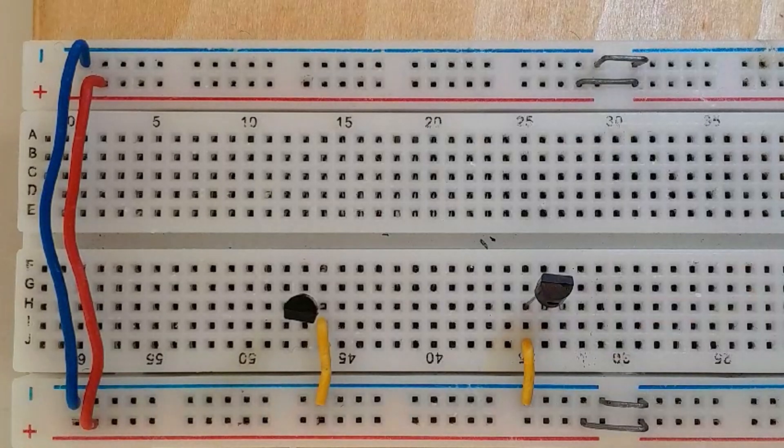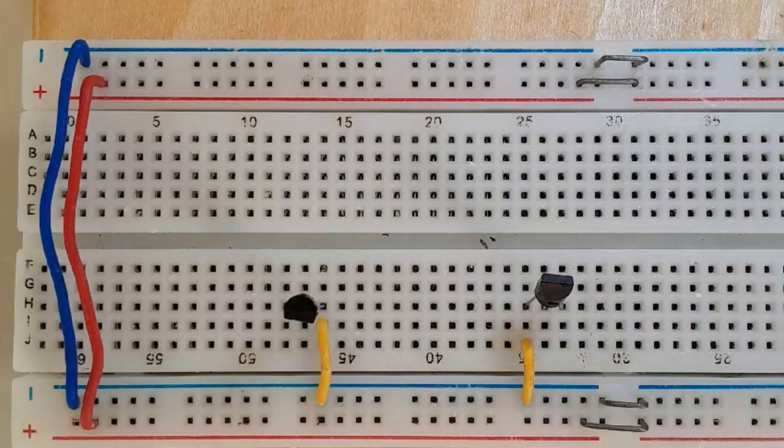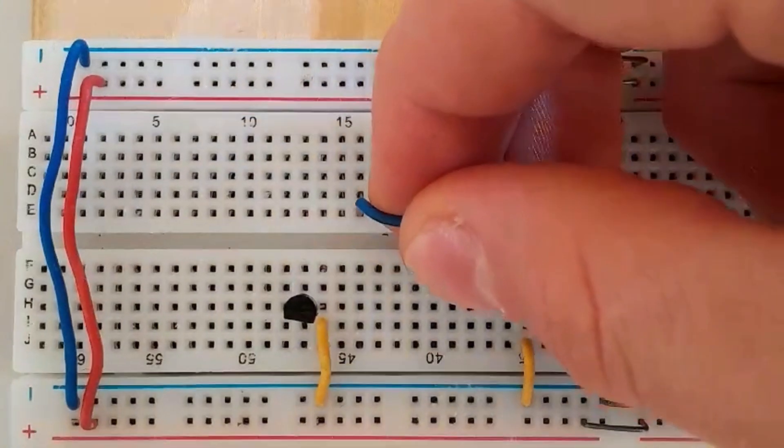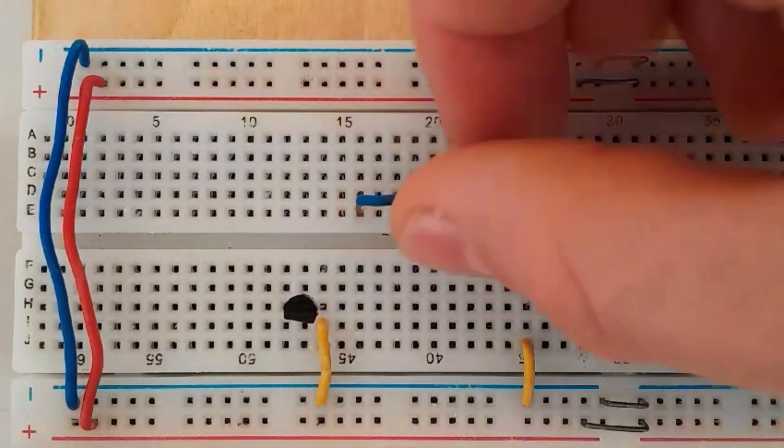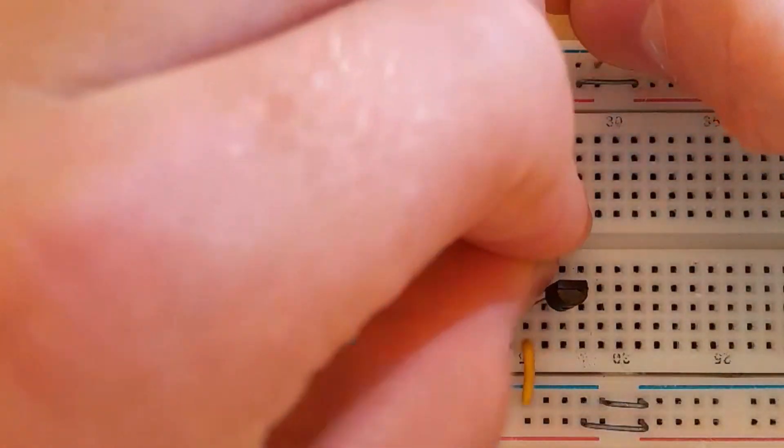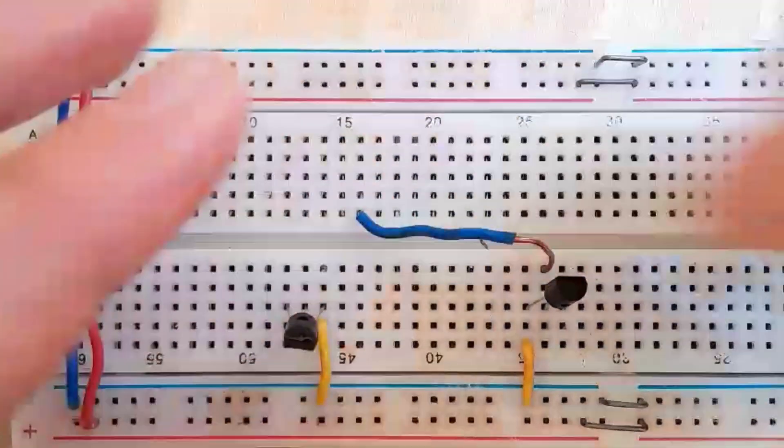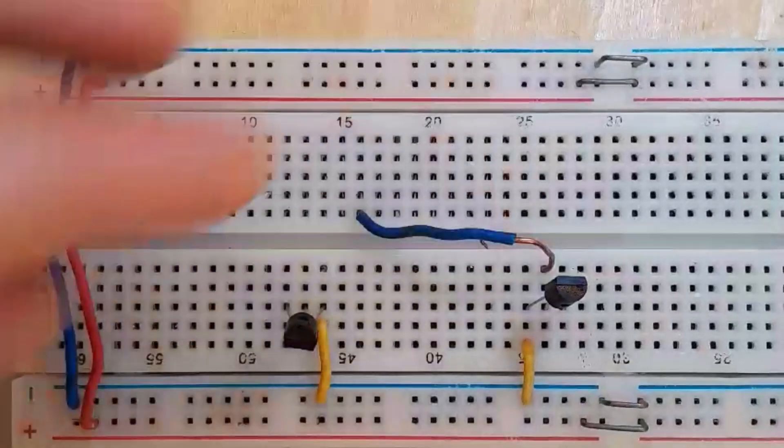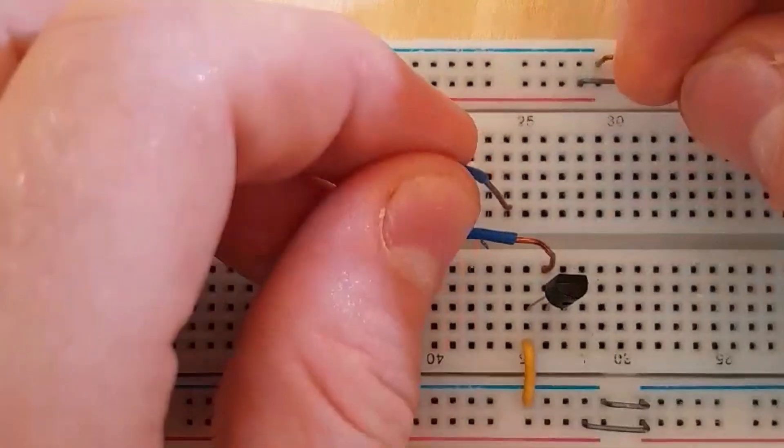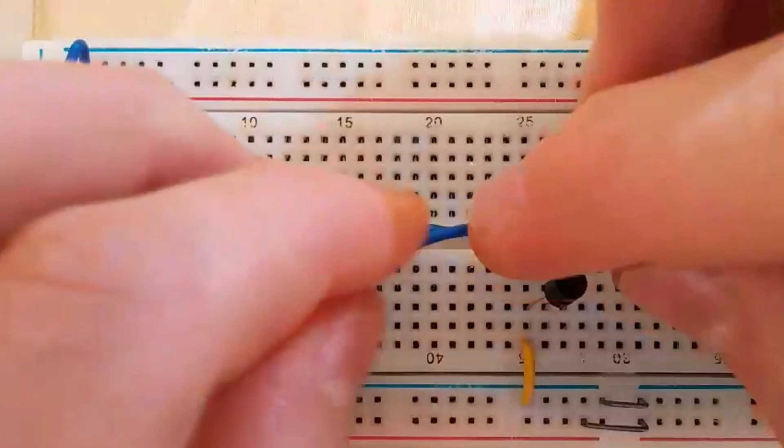Then you're going to connect the base to the other side of the breadboard. And the other transistor also, you need to connect the base to the other side.